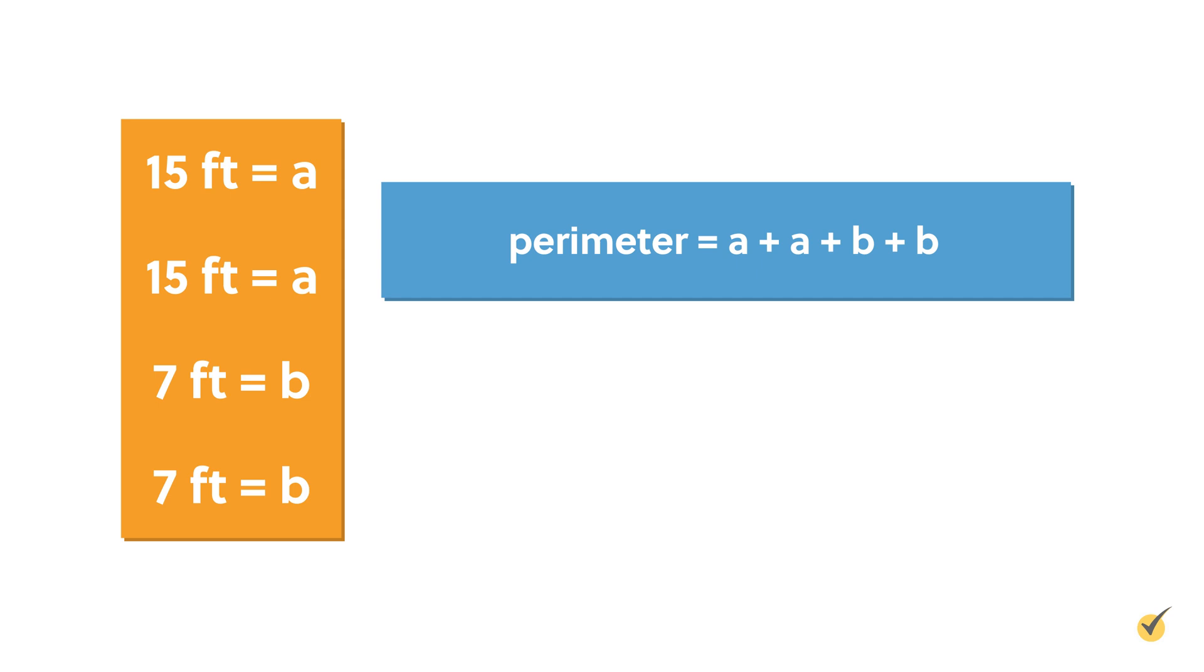Now, let's substitute in our numbers. Perimeter equals 15 feet plus 15 feet plus 7 feet plus 7 feet. Added together, we get 44 feet.